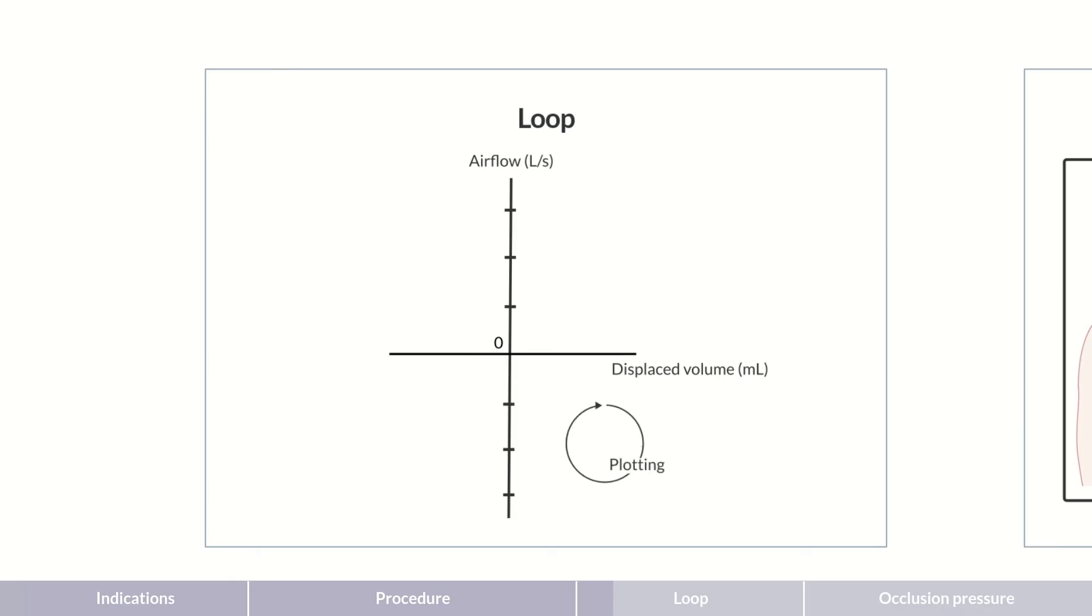Plotting is performed clockwise. During inspiration, the displaced volume of air as well as the airflow initially rise. However, the more air flows into the lungs, the lower the negative pressure in the alveoli generated for inspiration.